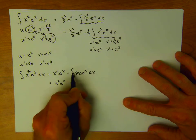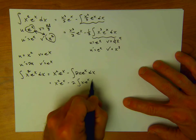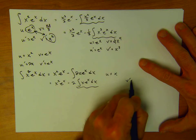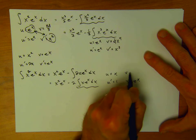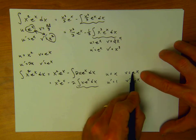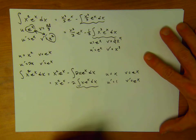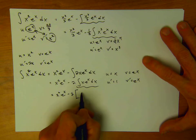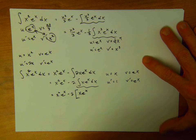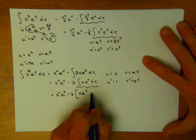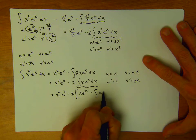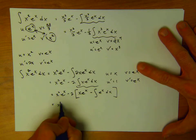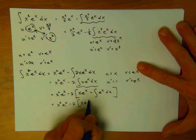So we have x squared e to the x minus 2 times the integral of x e to the x dx. Let's use integration by parts on that: let u equal x, v prime equal e to the x, so u prime is 1 and v is e to the x. Now u prime times v is just e to the x — something we can do. So we get x squared e to the x minus 2 times the quantity x·e to the x minus the integral of e to the x dx. That gives x squared e to the x minus 2 times (x·e to the x minus e to the x).